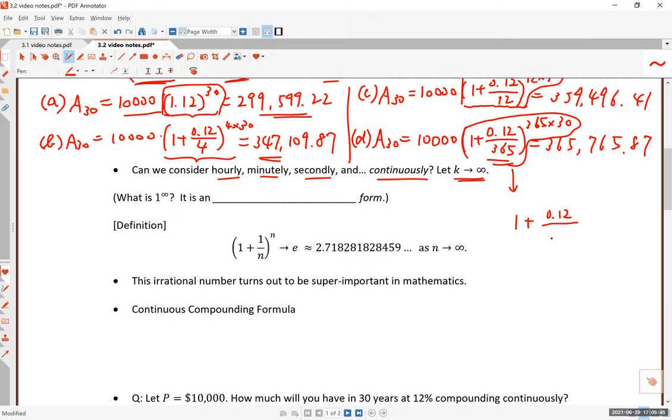This number gets really really small. You've already seen 0.12 divided by 365 is a very tiny number. So it turns out the number inside the parentheses approaches one - one plus a very small number - but this exponent gets bigger and bigger.